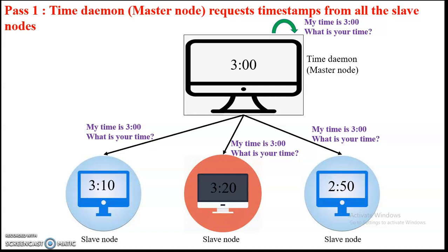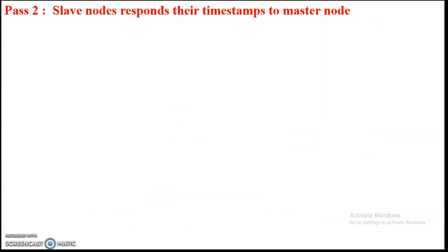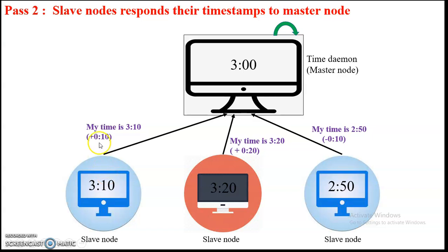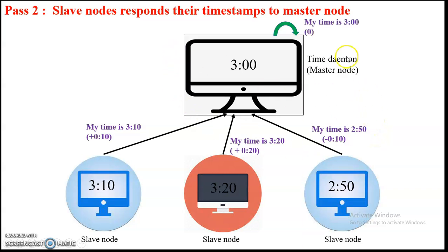The master node also asks for a timestamp from itself. In pass 2, the slave nodes respond with their timestamps to the master node. Slave node 1 says its time is 3:10, meaning it is ahead by 10 minutes. Slave node 2 says it is ahead by 20 minutes because it has 3:20. The master node also sends itself the time, noting zero adjustment needed since it already has 3:00.